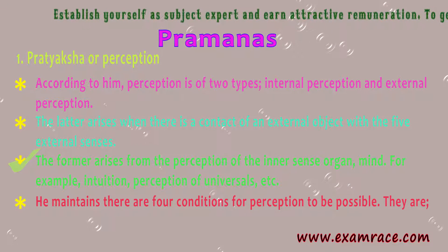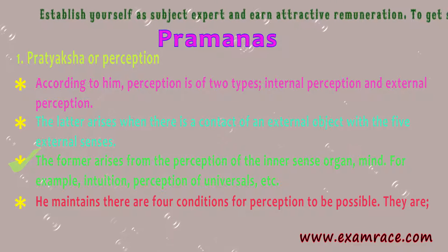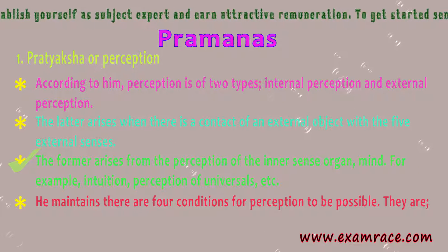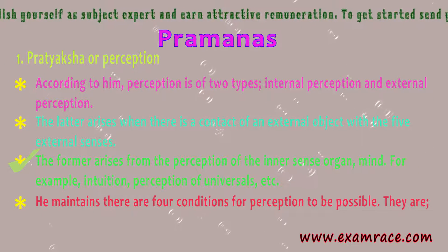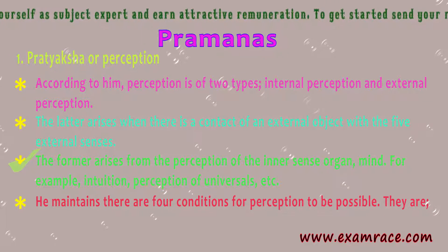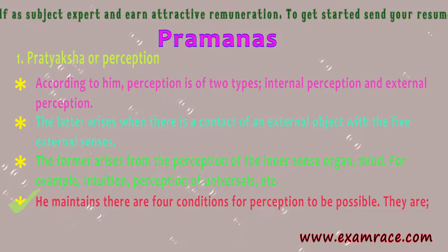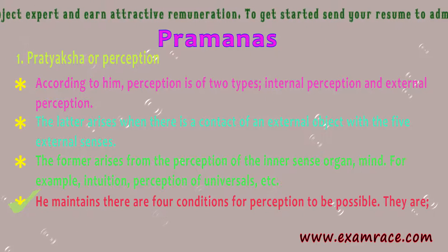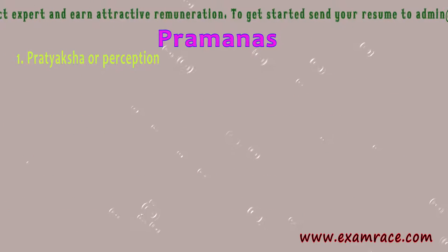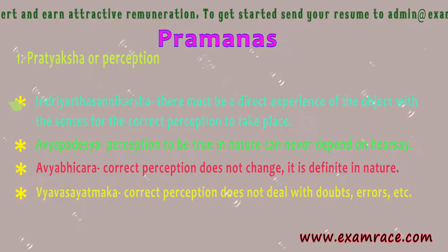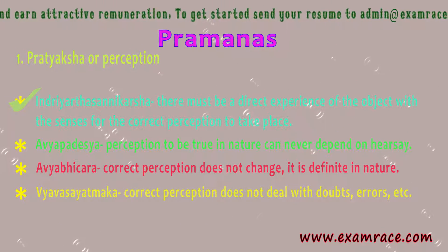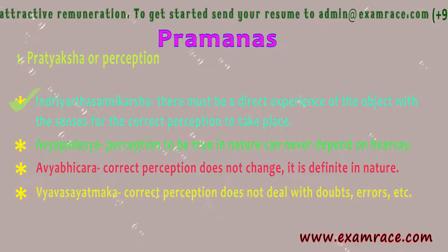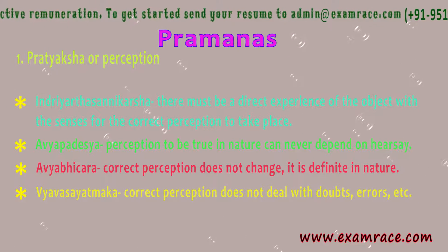Internal perception arises from the perception of the inner sense organ, the mind — for example, intuition, perception of universals, etc. Shankara maintains there are four conditions for perception to be possible. The first is Indriya Arthasanikarsha: there must be a direct experience of the object with the senses for correct perception to take place.